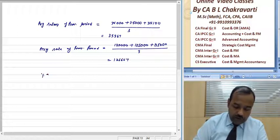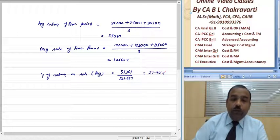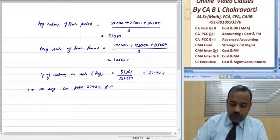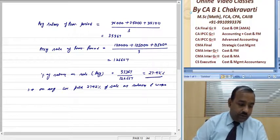The percentage of salaries on sales: 35,367 upon 1,26,667, that is 27.92%. That is, on average we paid 27.92% of sales as salary and wages. This becomes our base. Now, sale for 2012 is 1,50,000.